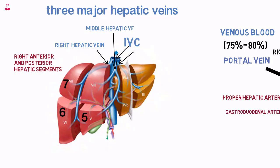The middle hepatic vein lies in the interlobar fissure. It drains segments 4, 5, and 8, and then enters the IVC at the anterior or right anterior surface.